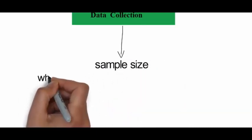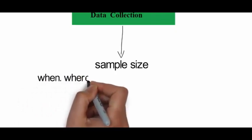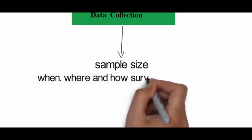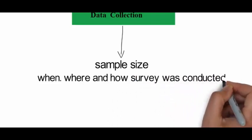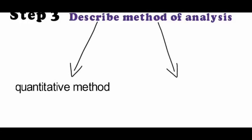Where, when, and how your survey was conducted. Here describe the sampling method used to select participants, sample size, and response rate. Step three: Describe the method of analysis. In this type, you should process and analyze the data.